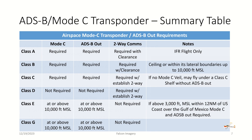If there's no Mode C veil, you may fly underneath a Class C shelf without ADS-B out. In Class Delta, there's no requirement for Mode C or ADS-B out; two-way communications are required when talking with the tower at that airport. In Class Echo, Mode C and ADS-B out are required at or above 10,000 feet MSL; two-way communications are not required. If above 3,000 feet MSL within 12 nautical miles of the U.S. coast over the Gulf of Mexico, Mode C and ADS-B out are required. In Class Golf, Mode C and ADS-B out are required at or above 10,000 feet MSL; two-way communications are not required because it's uncontrolled airspace.